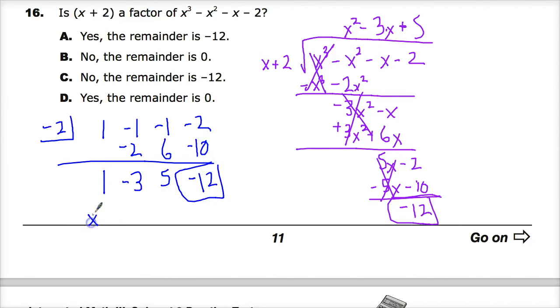There's my remainder, there's my x squared minus three x plus five, just like up here. So the answer to this is C. It is not a factor because there is a remainder.